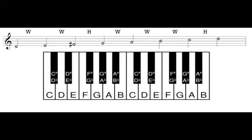I want a whole step between D and E, and looking at the piano I see there are two half steps — D to D sharp and D sharp to E. This is good. I want a whole step between E and F, but E to F is only a half step, so I need to change that note to F sharp. E to F is one half step, F to F sharp is two half steps, so E to F sharp is the whole step we're looking for. Next I need a half step between F sharp and G — there are no notes in between F sharp and G, so that's the half step I want. And a whole step between G and A: G to G sharp is a half step, and G sharp to A is a half step, making a whole step.